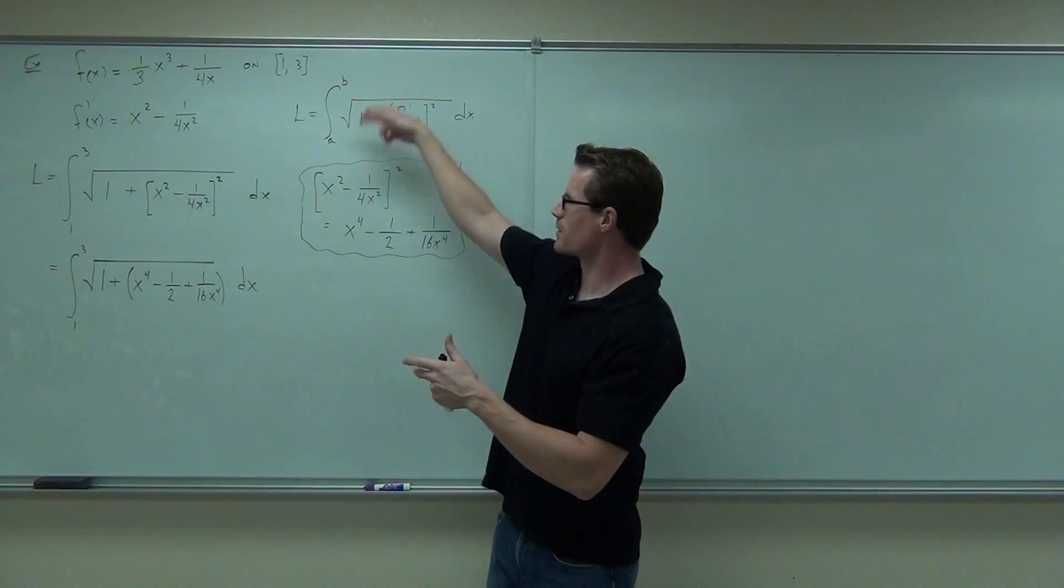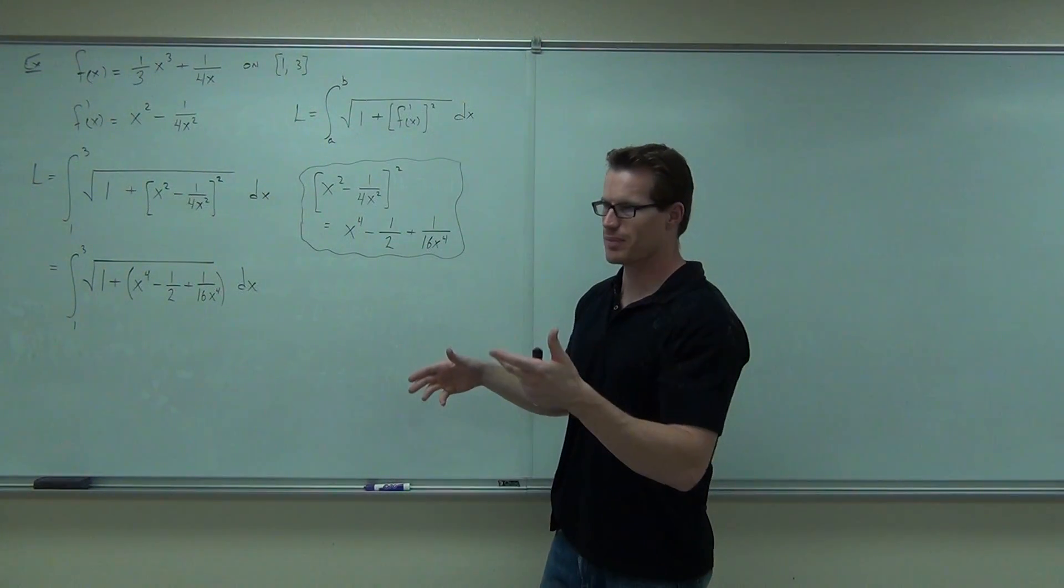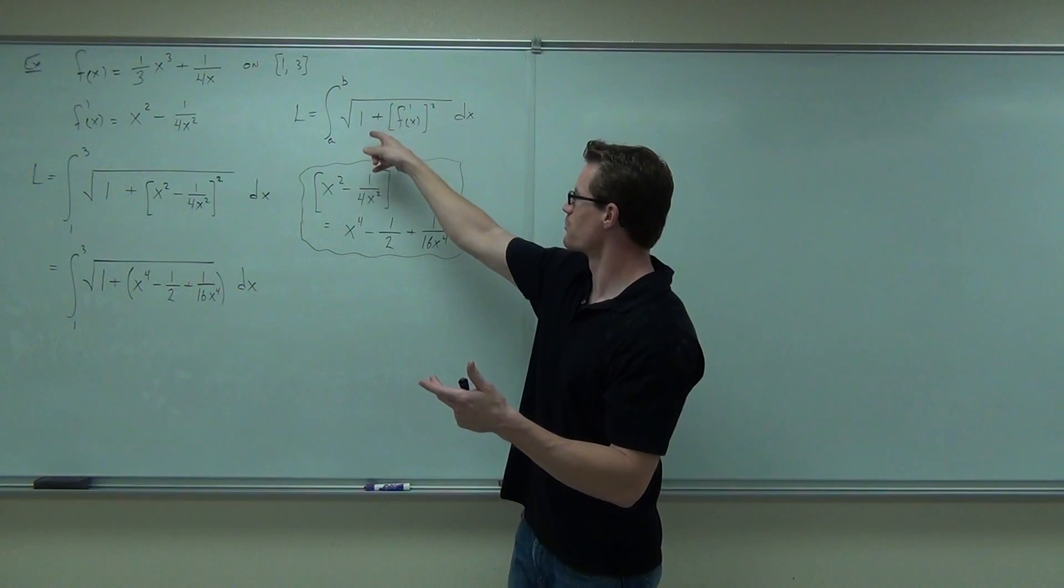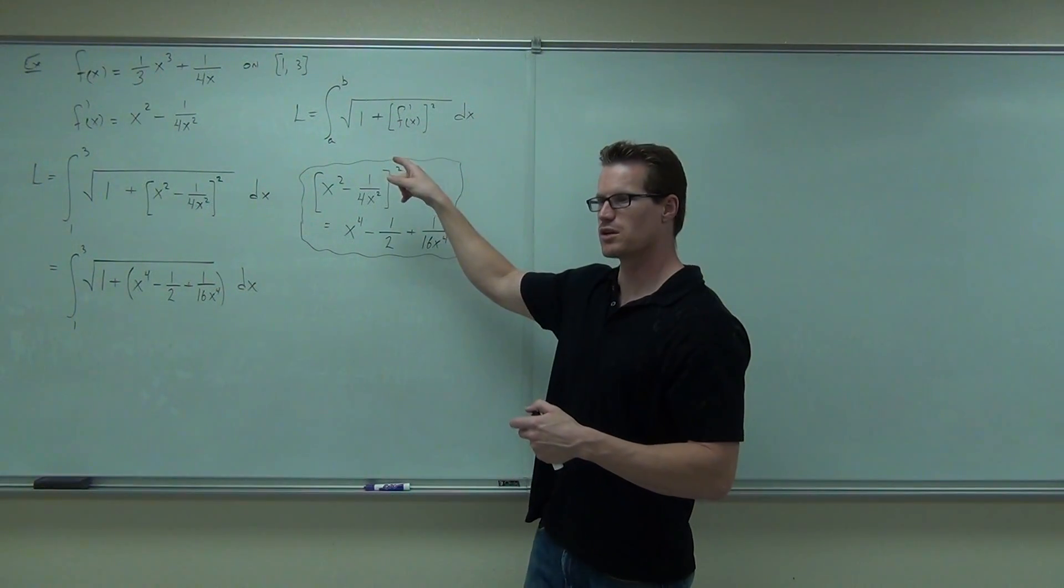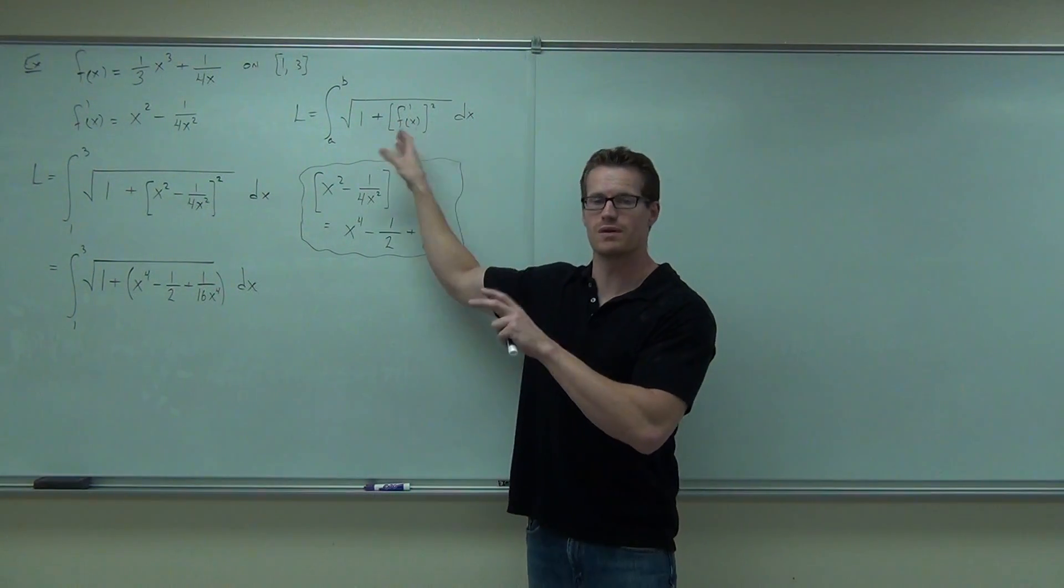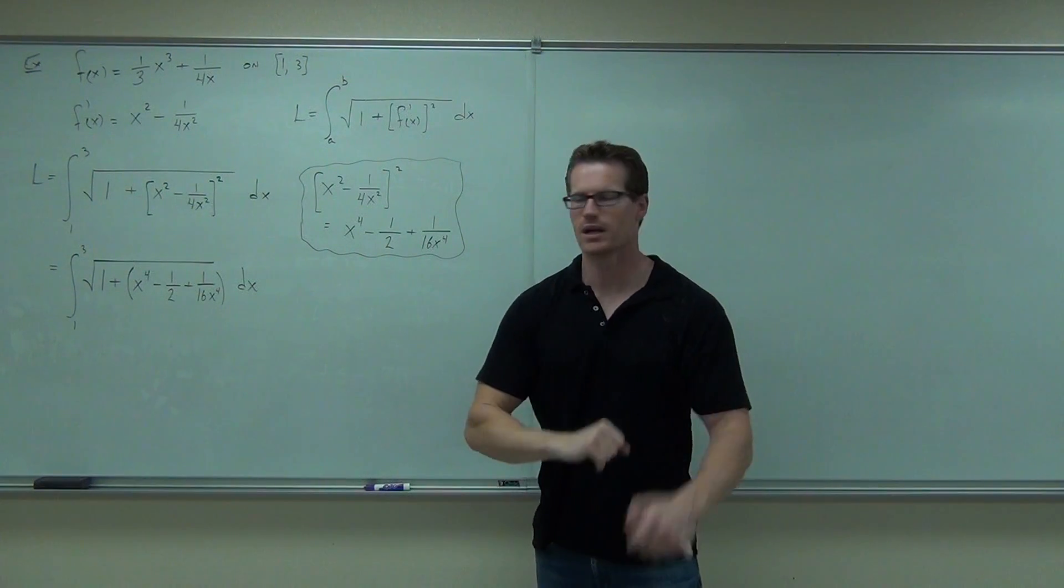So we have, we're doing an integral from our two bounds. And we're going to go square root of one plus the derivative of the function squared. Don't forget that's a derivative of the function. Don't forget to square it, dx.